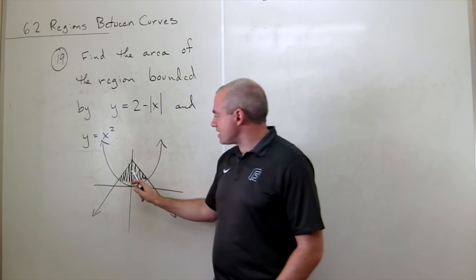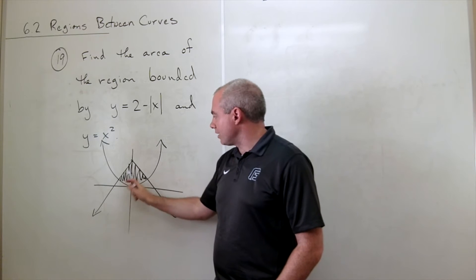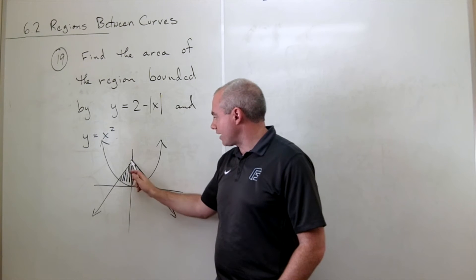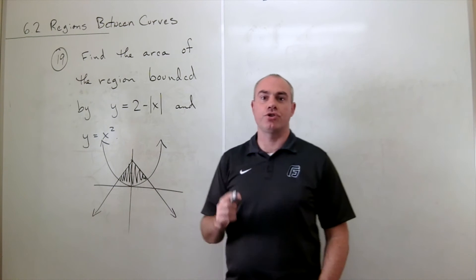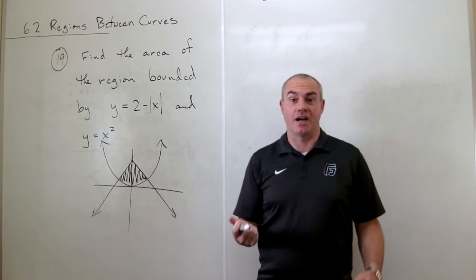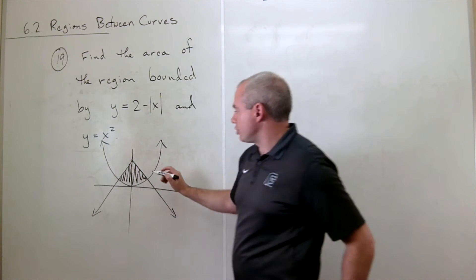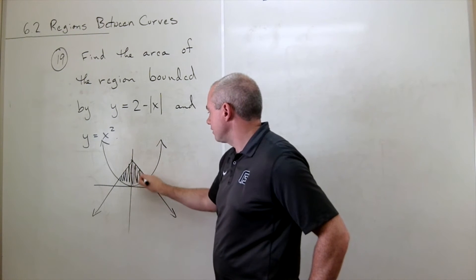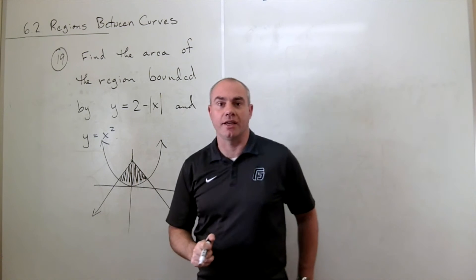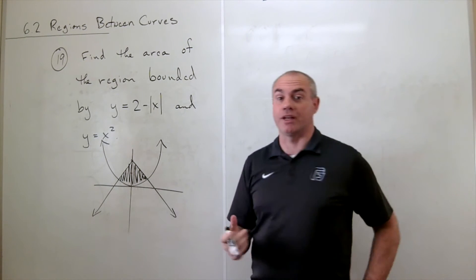So instead of trying to break this up and calculate the area of this piece and of this piece, I could just choose one of them and then double it. So the one that I'm going to choose is I'm going to take this piece that's on the right side, this side over here, and just calculate the area over there and then double it.